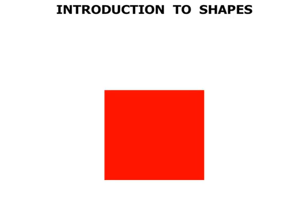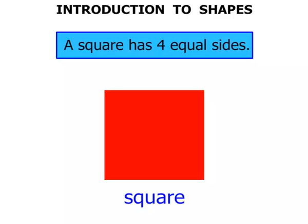Now, you've probably seen this shape before. It's a square. And a square has four equal sides.